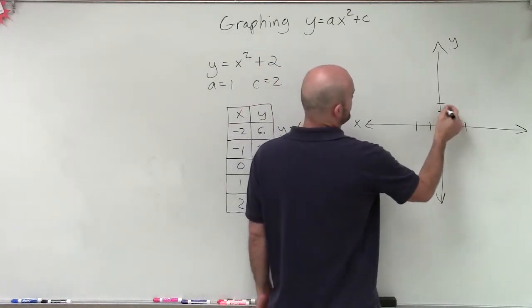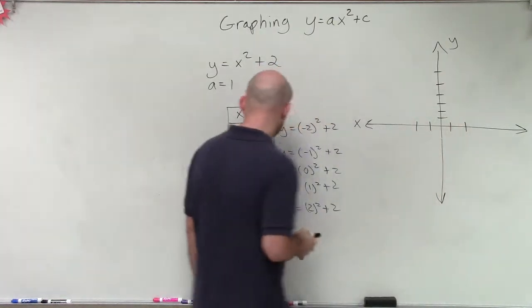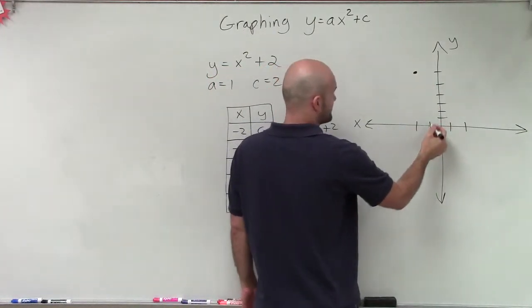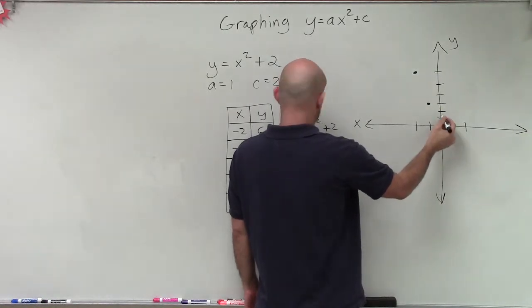And I'm going to go all the way up to 6. 1, 2, 3, 4, 5, 6. So I go up to negative 2, positive 6. Negative 1, positive 3. 0, 2.